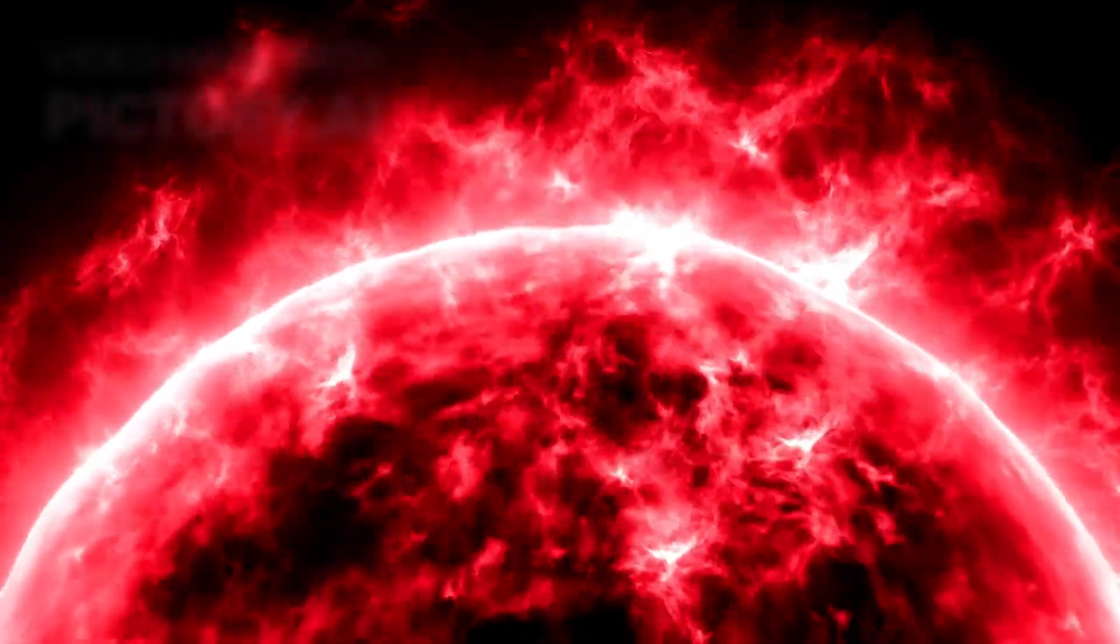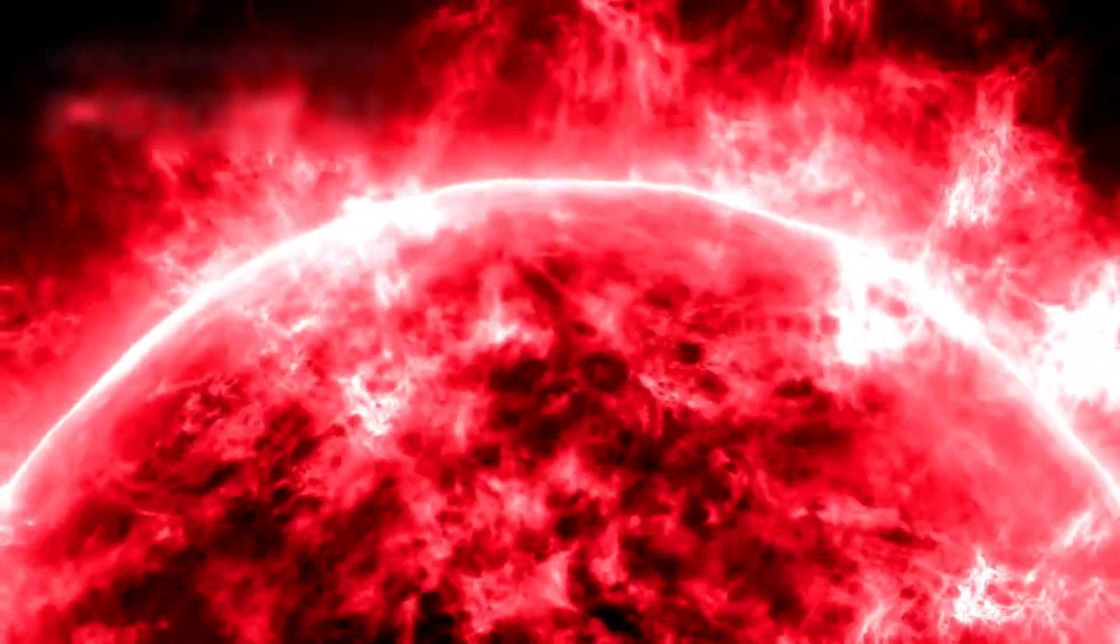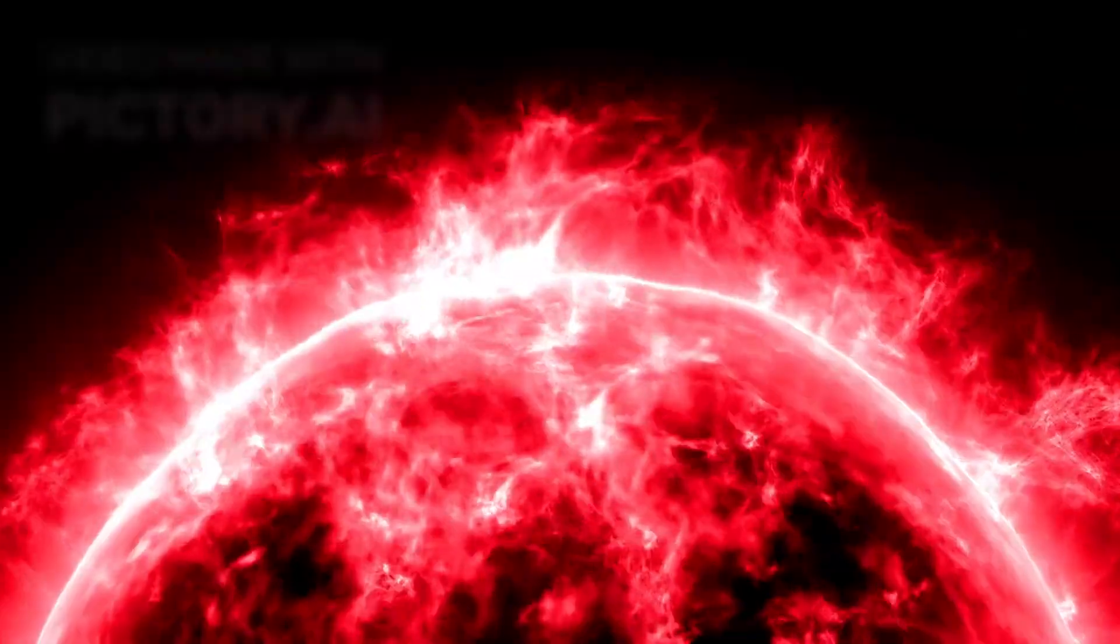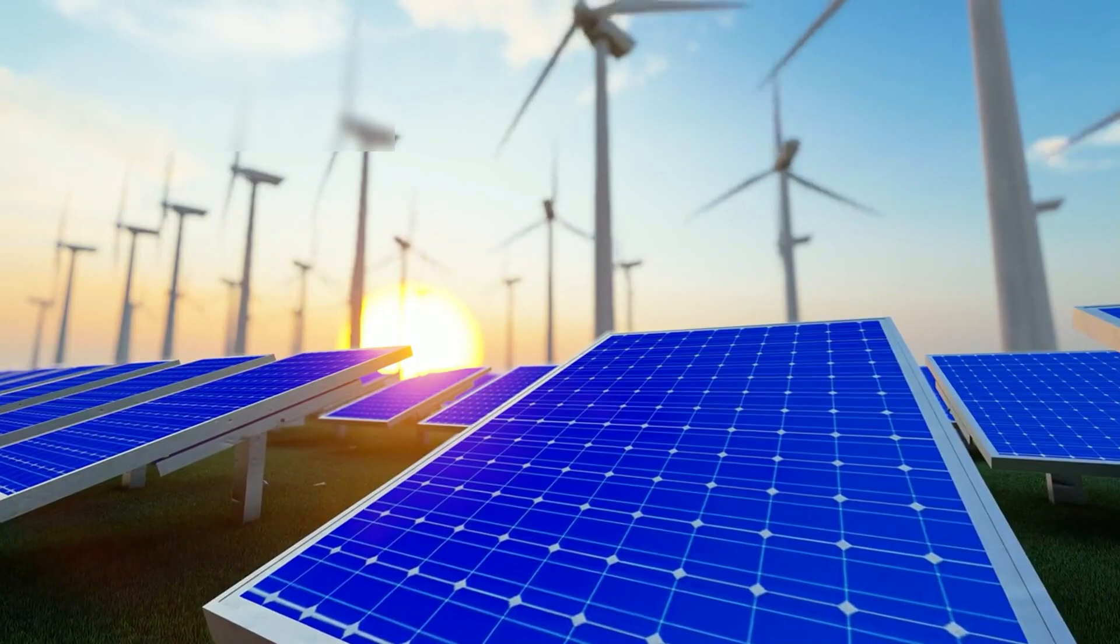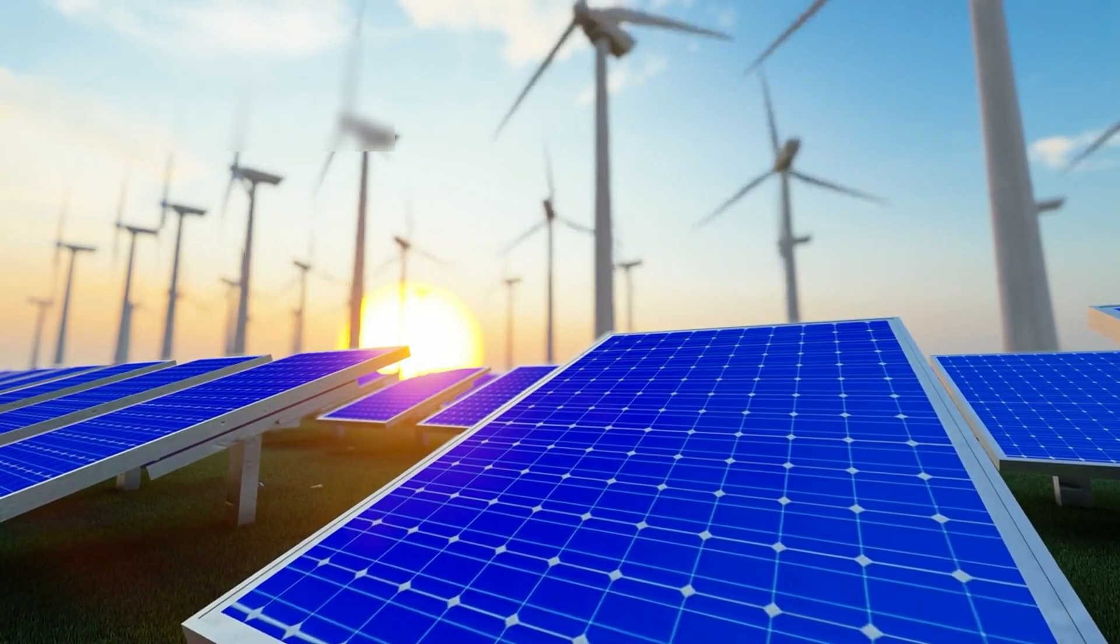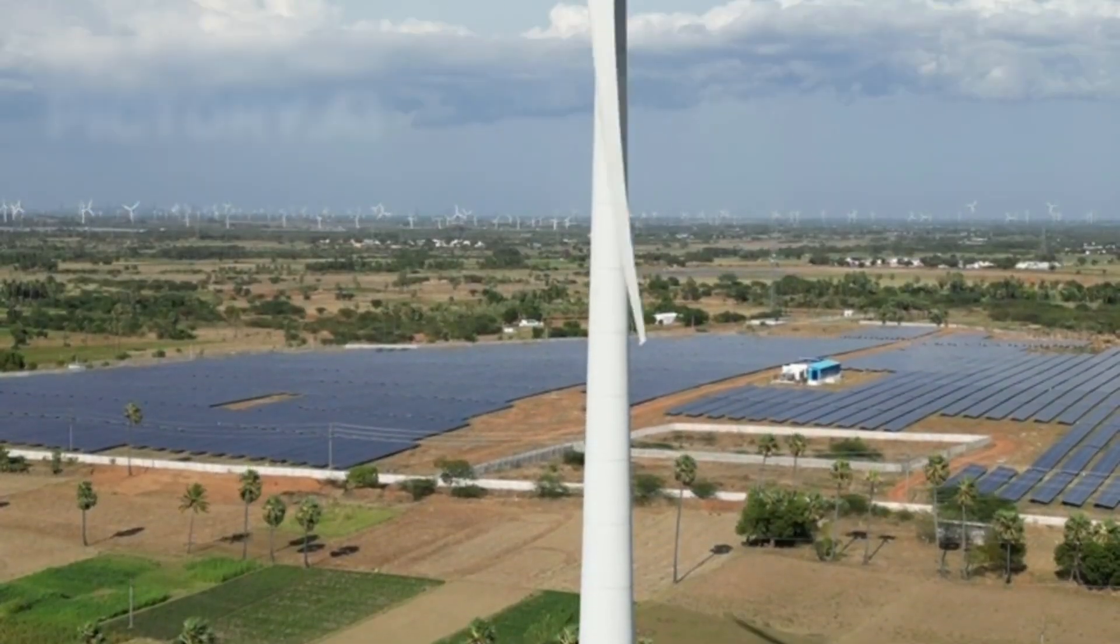For billions of years, the sun has been untouchable—a perfect engine of light and plasma ruling the solar system with absolute power. Its solar wind, a storm of charged particles, has always flowed outward, shaping planets and carving the boundaries of our world. Nothing has ever bent it.